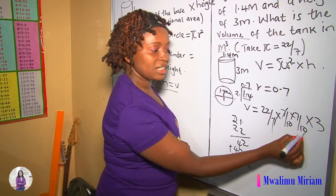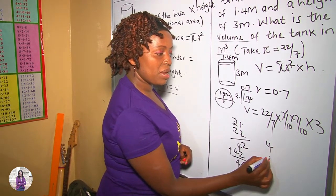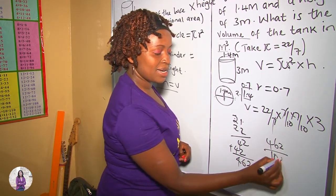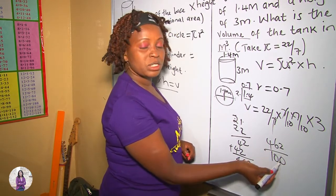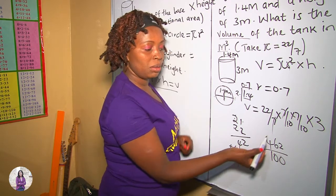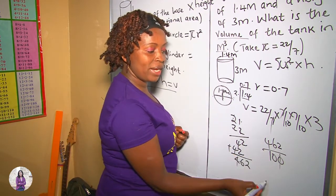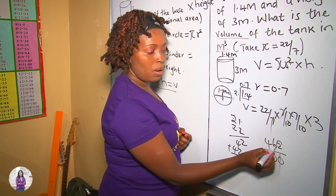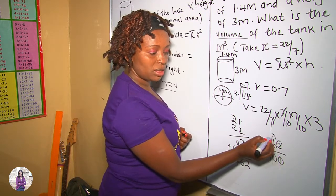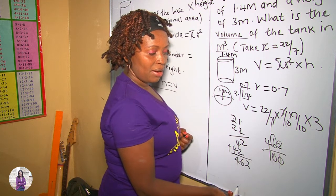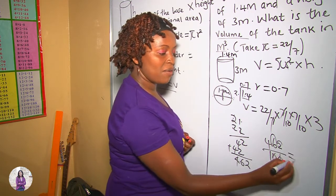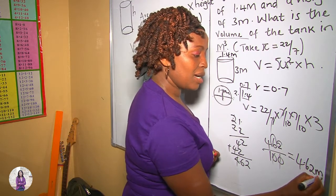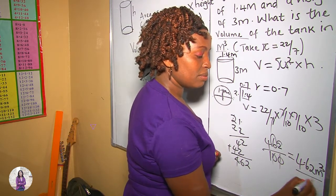Our denominator is 10 times 10, which is 100. So our numerator is 462 divided by 100. When we divide using powers of 10, we introduce decimals to the left. And we have our answer as 4.62 meters cubed.